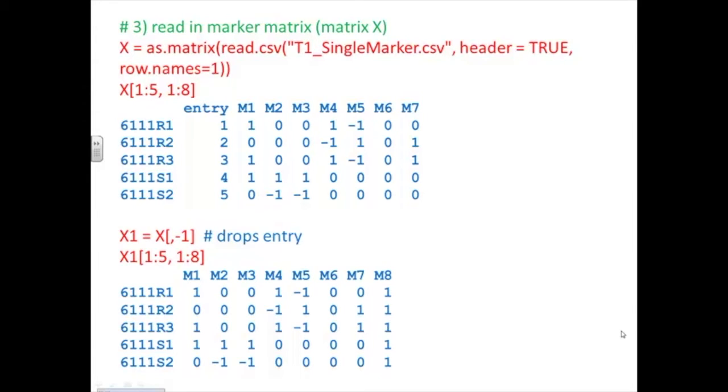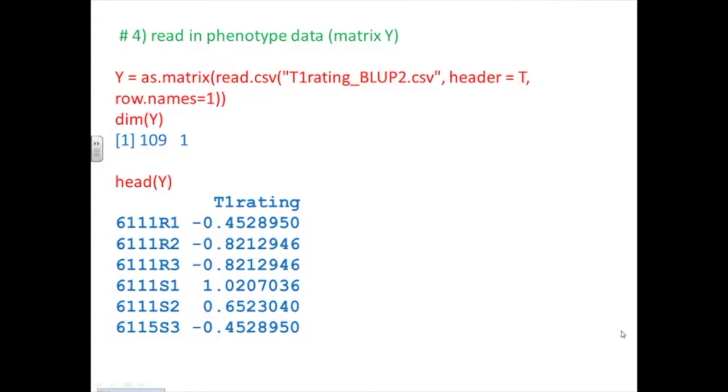I'm going to go ahead and read in my marker matrix. And I have a column here in that matrix for entry. So this gives me, I can stick with the original name or I have an entry number that links to that name. Well I don't really need that. So I'm going to drop entry here and you can see that it's gone here. And then I'm going to bring in my phenotypic data. And you can see here, I'm really just bringing in a vector with a blup for my disease rating.